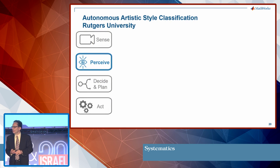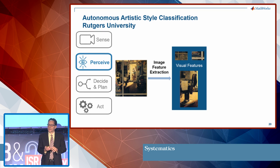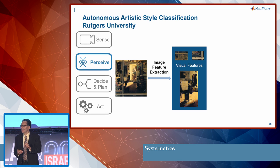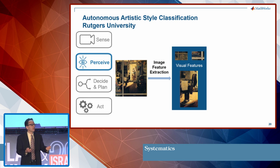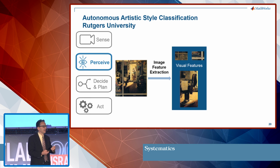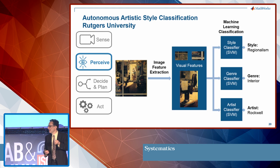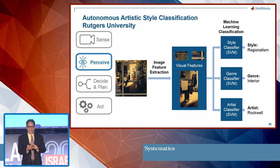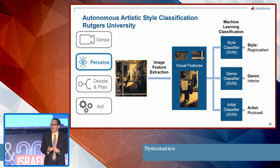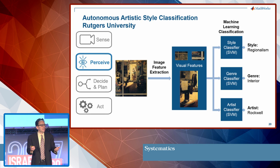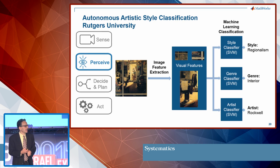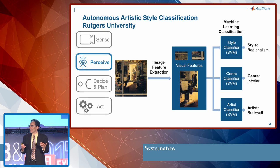Researchers at Rutgers University figured they would try using a computer to enhance the human art historian's ability to make these connections. They used computer vision and applied unsupervised learning to detect low-level features like edges and corners, then used supervised learning to detect objects like the chair, the people, and the stove. They fed both low-level and high-level features into support vector machines — one for style, one for genre, and one for artist. By processing thousands of paintings, they were able to make the connections shown, applying some level of autonomy to a rather surprising application.